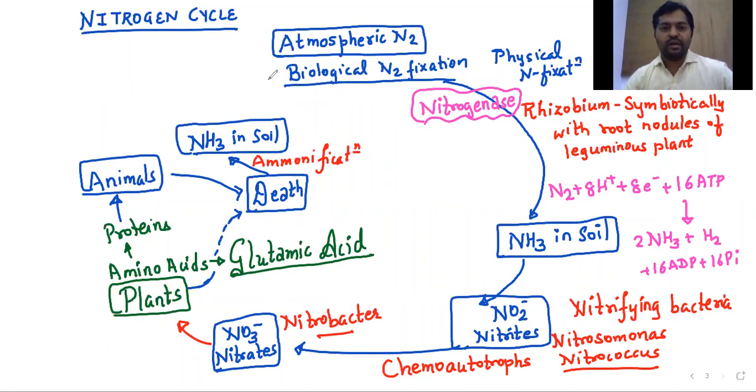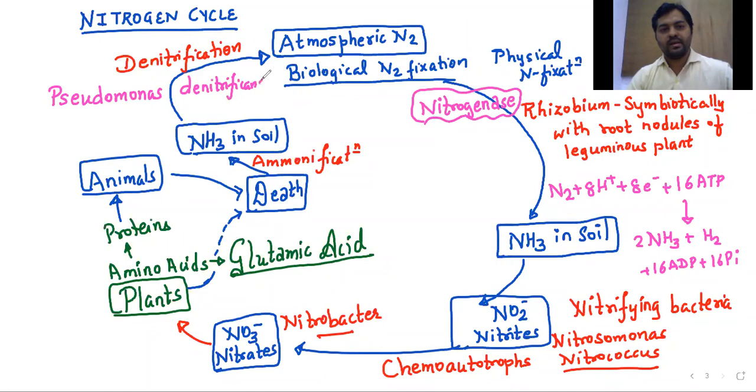Finally, ammonia will convert into atmospheric nitrogen, and that process is called denitrification. That is done by bacteria like Pseudomonas denitrificans, Bacillus species, Paracoccus, etc. These are organisms that perform this.